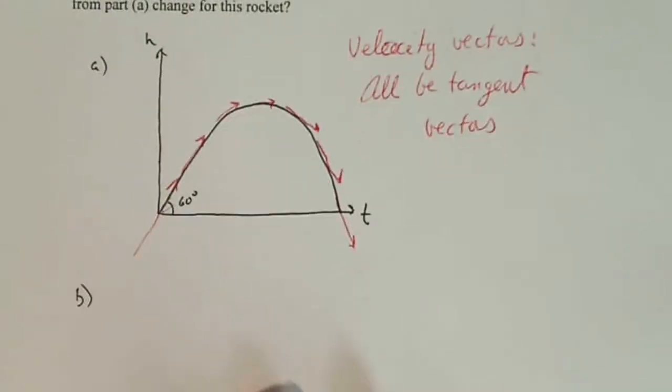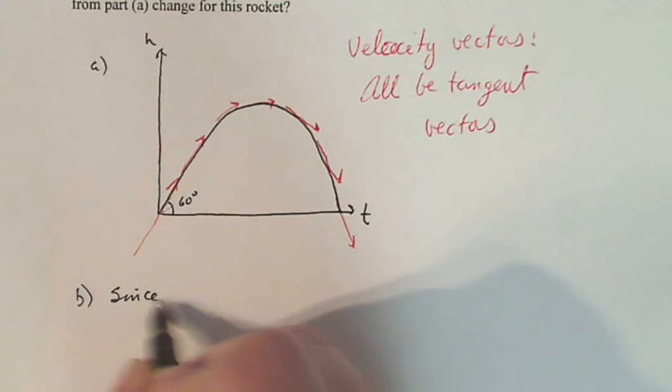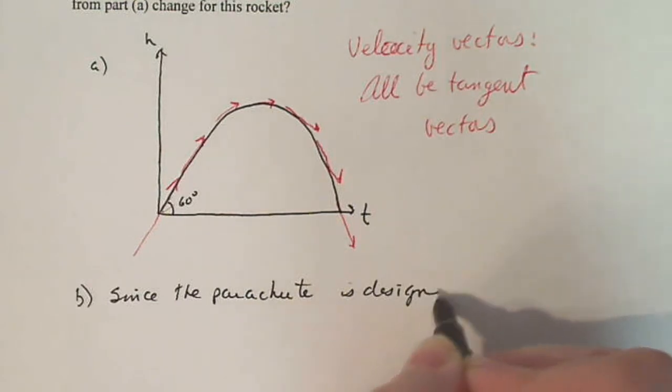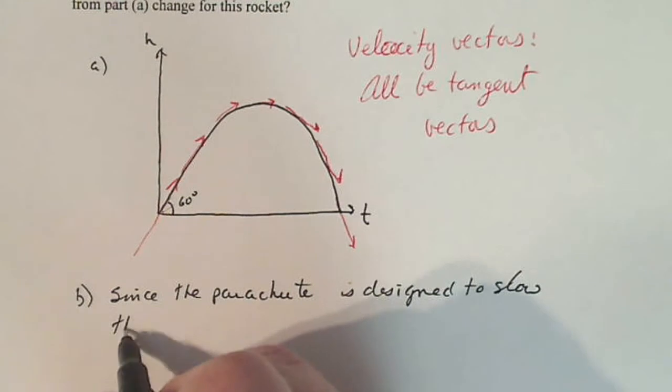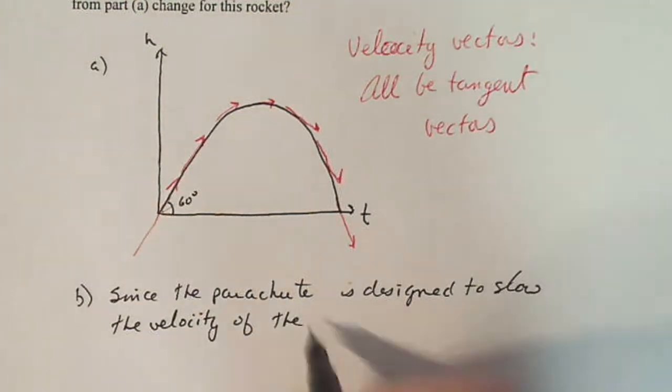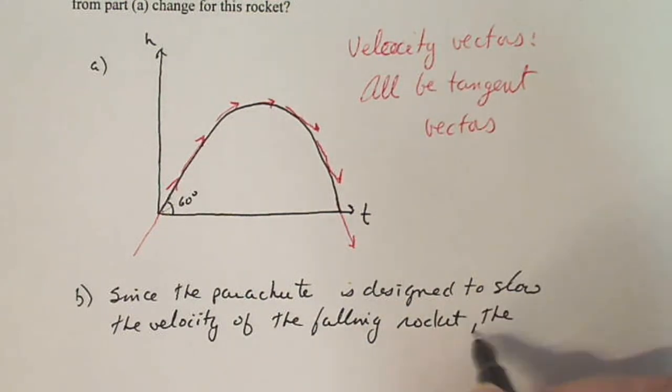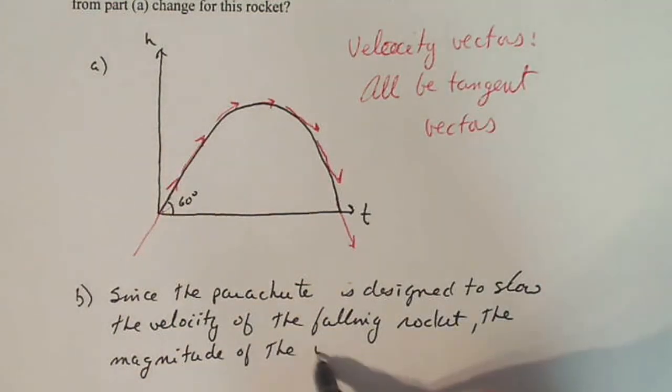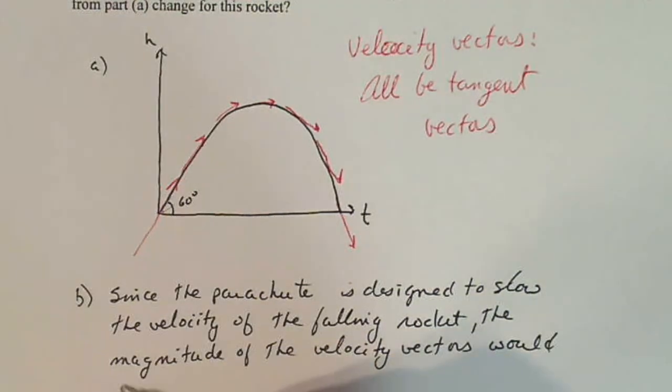since the parachute is designed to slow the velocity of the falling rocket, the magnitude of the velocity vectors would lessen or shrink. The magnitude of the velocity vectors would become smaller on descent.